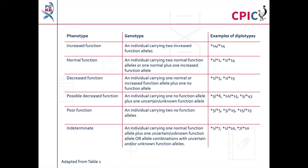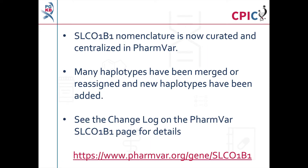Patients can be assigned an SLC01B1 phenotype based on the functional status of their SLC01B1 alleles. This table shows the different phenotypes that can be assigned along with example diplotypes. This information can also be found in Table 1 of the guideline. Gene information tables for SLC01B1 are available on the PharmGKB website. As part of producing this guideline, SLC01B1 allele nomenclature was curated and centralised into PharmVar, resulting in significant changes including the merging or reassignment of alleles.